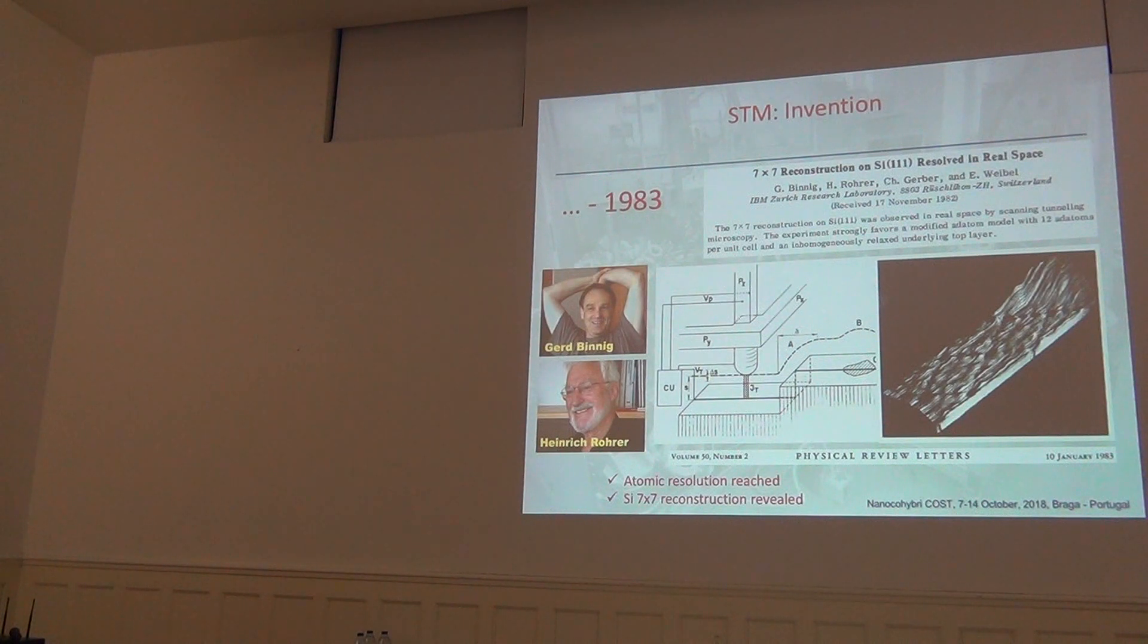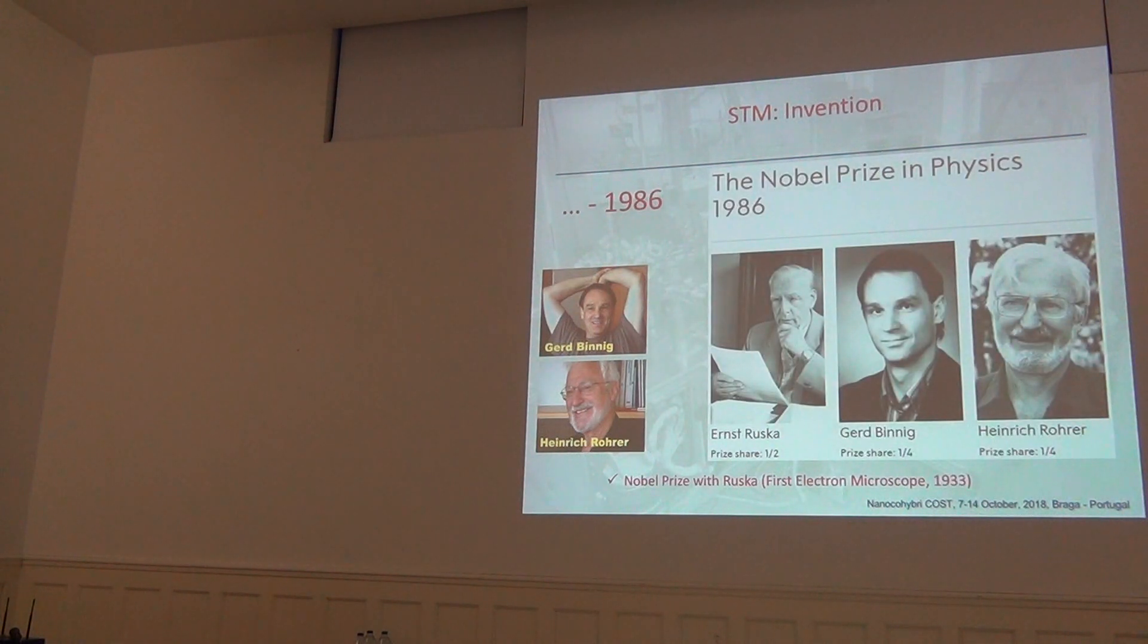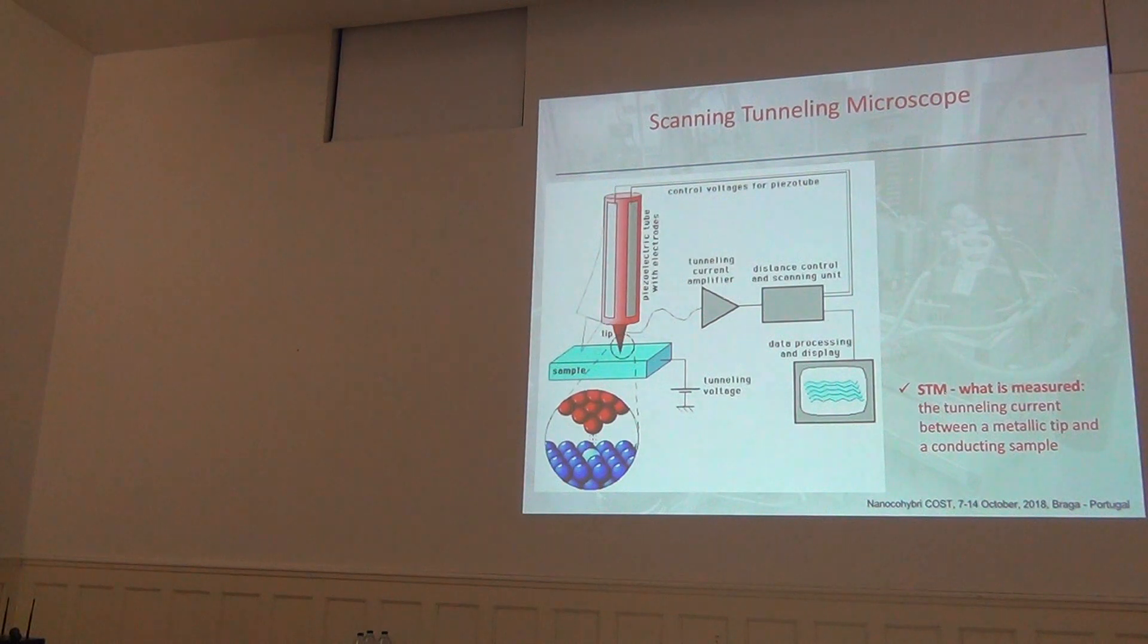So, the atomic resolution was clearly achieved, and silicon-111, 7x7 reconstruction revealed. By the way, please stop me and ask me questions if something is unclear. So, we are in 1983, and in 1986, three years after, they get a Nobel Prize, together with Ernst Ruska. Who knows Ernst Ruska? The prize was shared one half to Ruska, and just one quarter to Binning and Rohrer, because Mr. Ernst Ruska invented nothing but scanning electron microscope in 1933. So, some got Nobel Prize very fast, others waited for a while. But the justice was done, because this man is at least as important as those two.